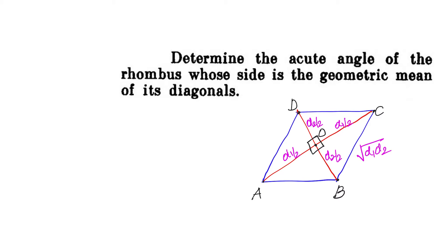The acute angle we need to find is 2θ. Since diagonals are angular bisectors, the total angle is 2θ. We will find θ first, then double it to get 2θ. Looking at the right angle triangle, we can leverage the Pythagorean theorem.